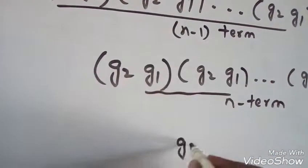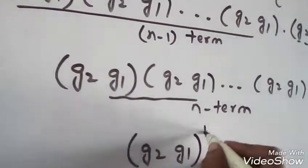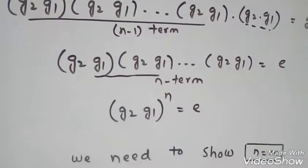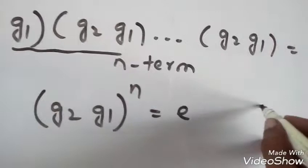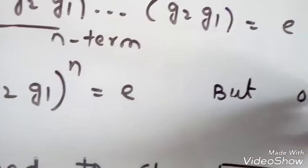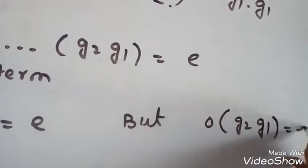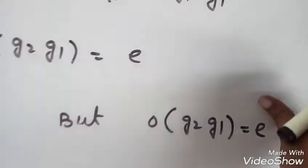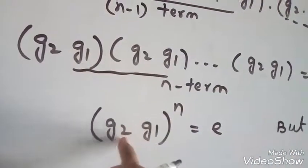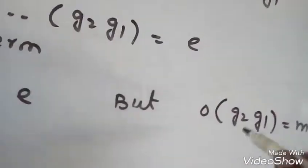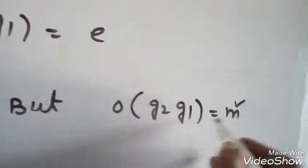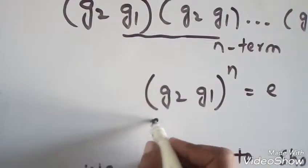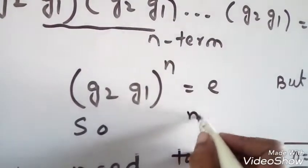So (G2·G1)^N equals identity. But suppose order of G2·G1 is M. So by definition, M is the least positive integer such that (G2·G1)^M equals identity. Since (G2·G1)^N equals identity, by definition of divisibility, M divides N.